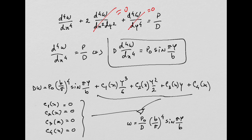To get the deflection, we just need to replace the y-coordinate. P_0 is the given distributed load on the plate, and D is the flexural stiffness, which we defined last week. You have everything to calculate the deflection. In this case the deflection is only a function of y — meaning for every x-coordinate, the deflection in the y-direction is the same for every cross-section in the x-direction.